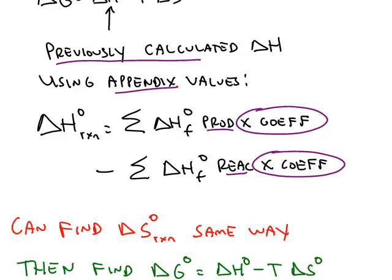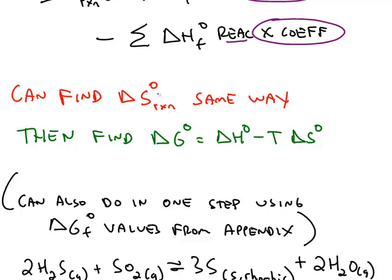You can calculate delta S exactly the same way. Use the appendix values, products minus reactants. If you know delta H and you know delta S, then you just have to plug in the temperature and you can calculate delta G. So that's one method of finding delta G for a reaction.